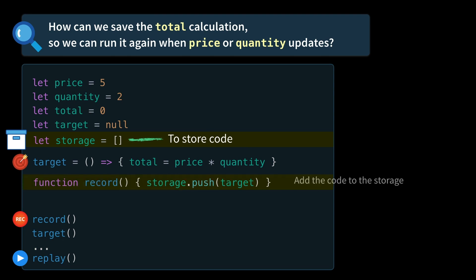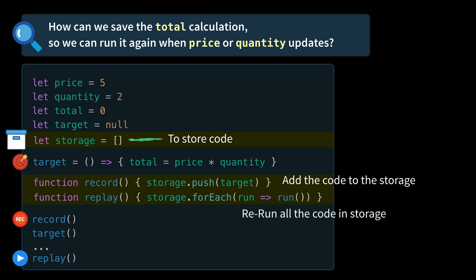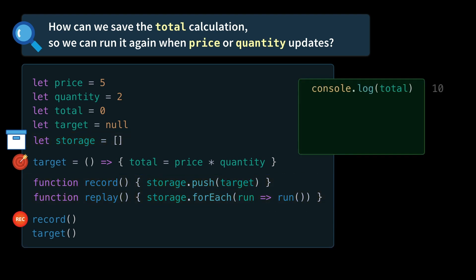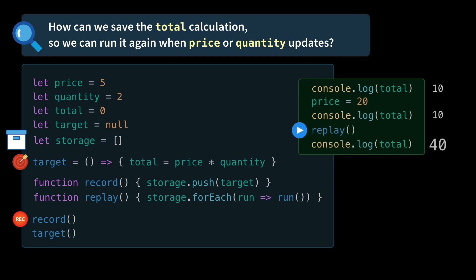We'll implement the record function, simply pushing our target anonymous function into our array. Then we'll create our replay function, just going through each anonymous function inside storage and running it. Now if we ran this code inside of our console and logged out total, we would get 10, as we would expect. If we change the price, we still get 10. But if we call replay, it'll rerun all of our saved functions. And then when we log out our total, we get 40. The total was rerun, just like we expected.